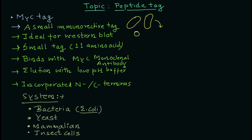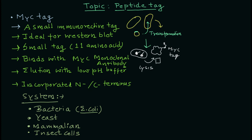Diagrammatically, here is how it works: you have a plasmid containing your gene of interest, and that gene includes the myc tag amino acid sequence. After transformation, the plasmid is used to express proteins. The resulting protein will carry the myc tag, but you will also have untagged proteins — so you have a mixture of tagged and untagged proteins.